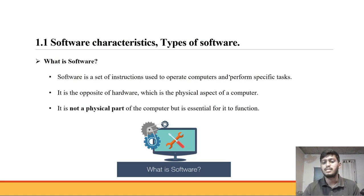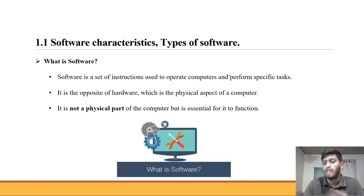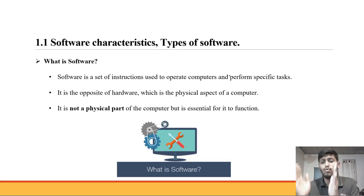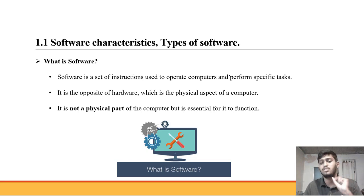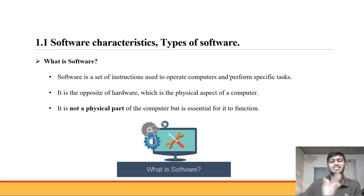Software is something you use in mobile — Instagram, WhatsApp, Facebook, etc. Software is made by coding. In coding, we have a set of instructions. We call the set of lines a program. A program is nothing but your instructions themselves.